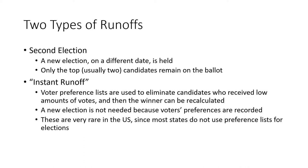There are really two types of runoffs. There's the second election runoff where we have a new election on a different date, and only the top — usually two — candidates remain on the ballot. But there's another type called an instant runoff, where we use voter preference lists to eliminate candidates who received low amounts of votes and then recalculate the winner, so we don't throw those votes away.